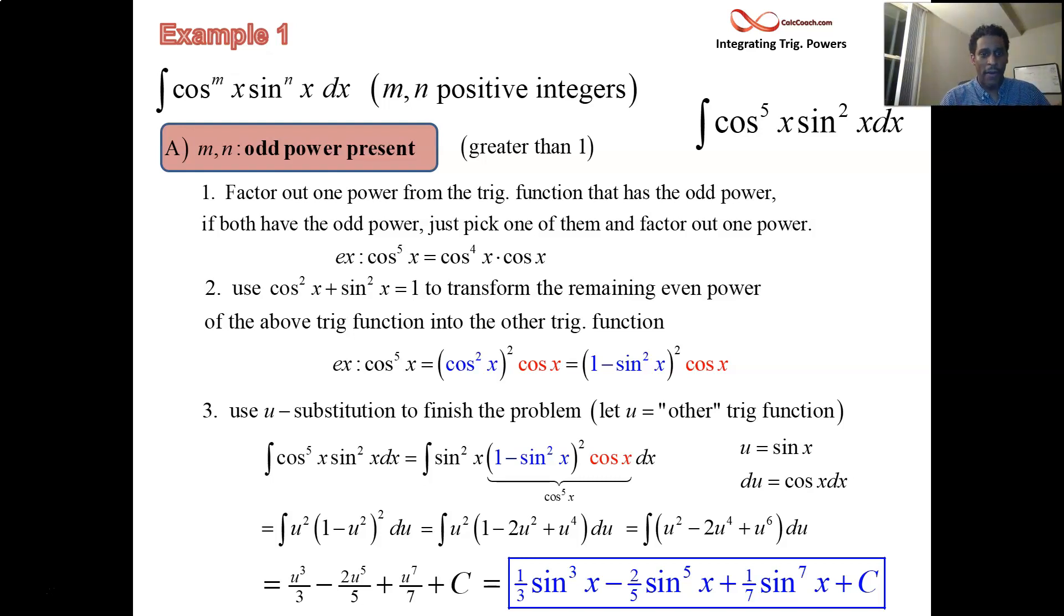If there's an odd power present, this is your attack. Factor out 1, make that part of du, convert the even remaining powers using the Pythagorean identity, and then do a u sub. And you'll have a polynomial integral to integrate.